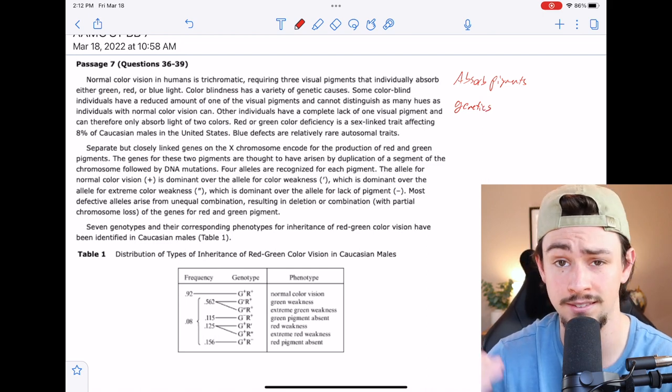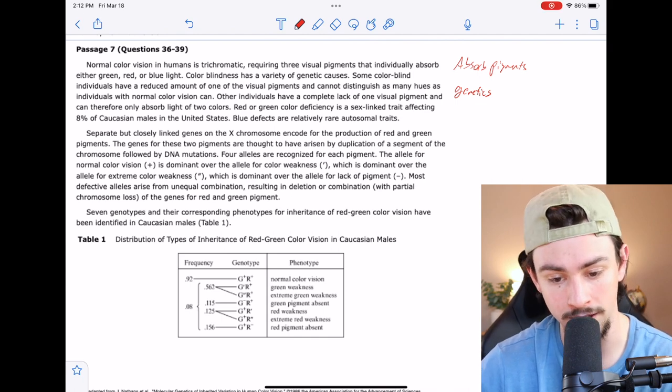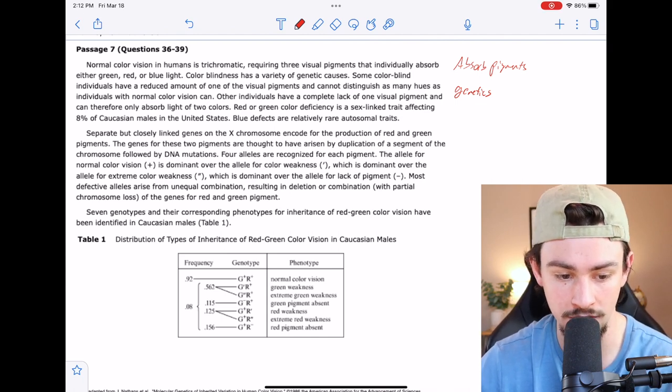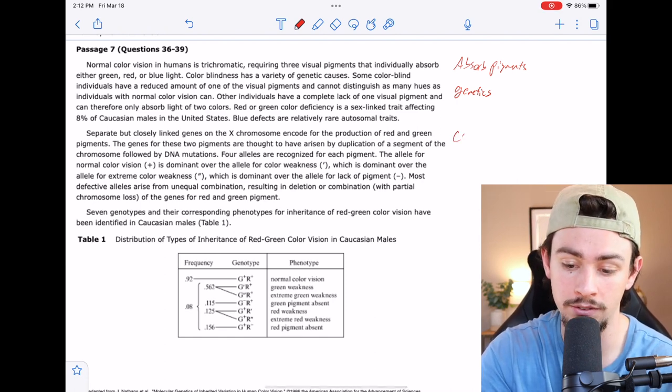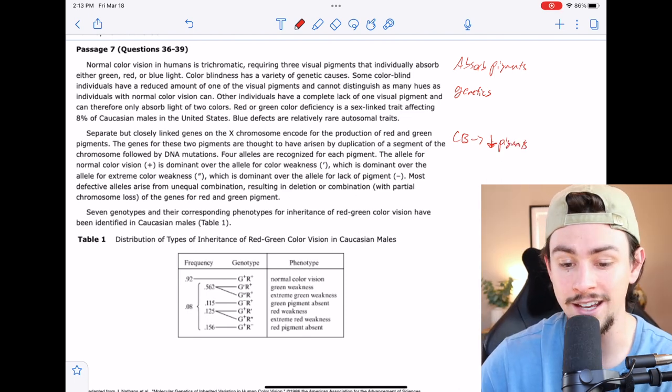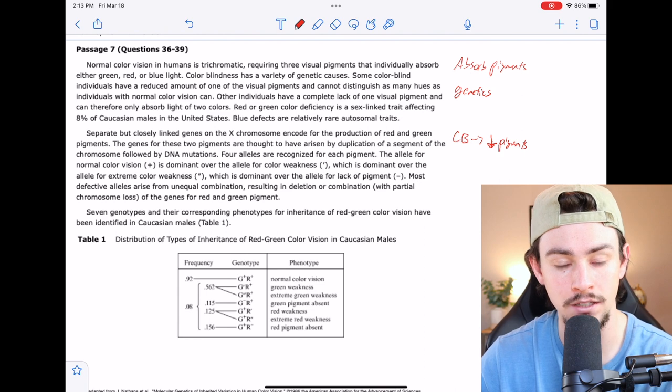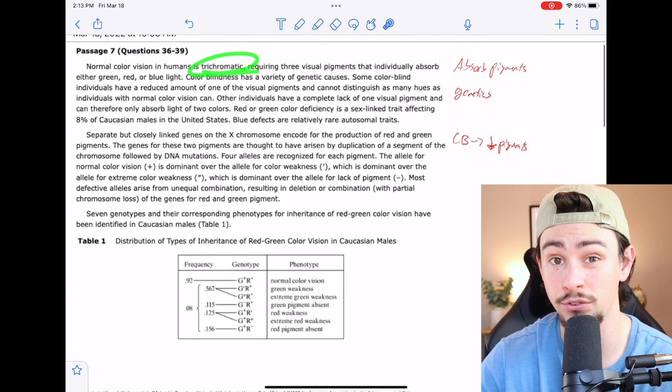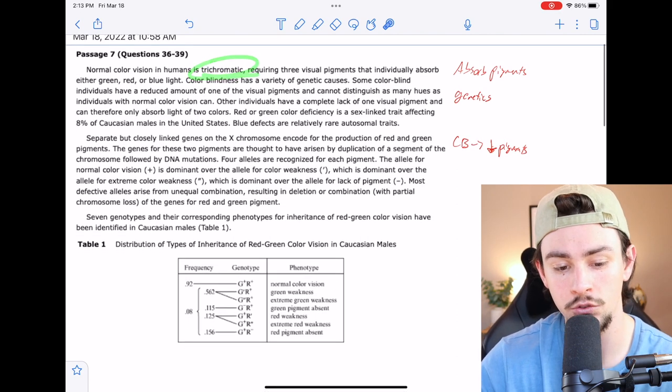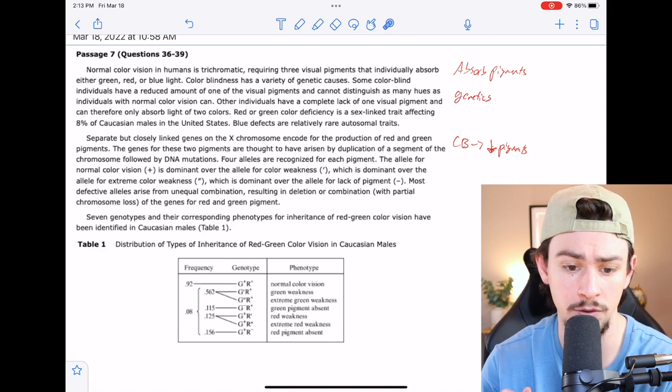Some colorblind individuals have a reduced amount of one of the visual pigments and cannot distinguish as many hues as individuals with normal vision. So on our flowchart, we can say color blindness is due to decreased pigments. Other individuals have a complete lack of one visual pigment and can therefore only absorb light of two colors. Remember they said our vision is trichromatic, meaning it involves three colors, and some people actually lose one of those colors. So now we're just dealing with only two colors and the different shades between those two.